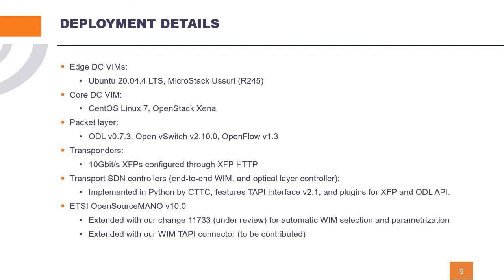These are the details for this demonstration. The important ones are that we are using MicroStack Ussuri for the edge data center, OpenStack Xena for the core data center, OpenDaylight and OpenBear switches controlled by OpenFlow for the packet layer, Transport API version 2.1 to interconnect the different OpenTransport SDN controllers, and we extend Open Source MANO version 10 with change 11.7.33 under review for automatic WIM selection and parametrization, and our WIM Transport API connector.